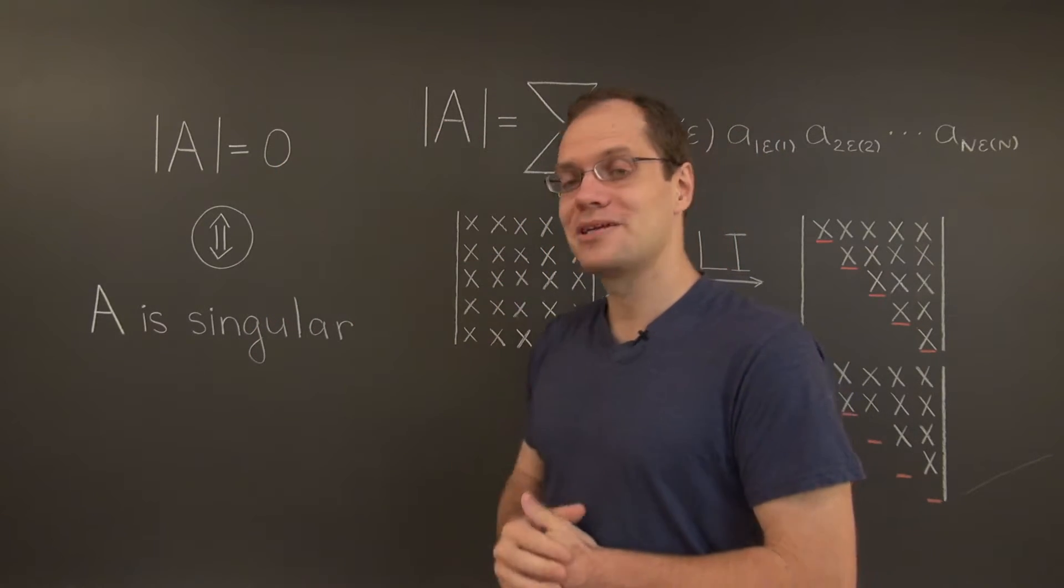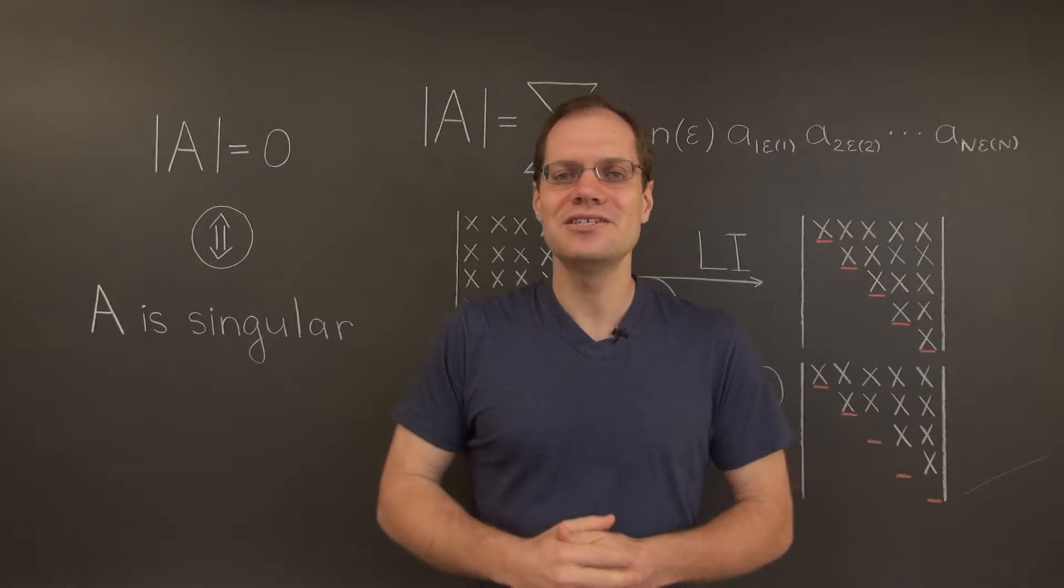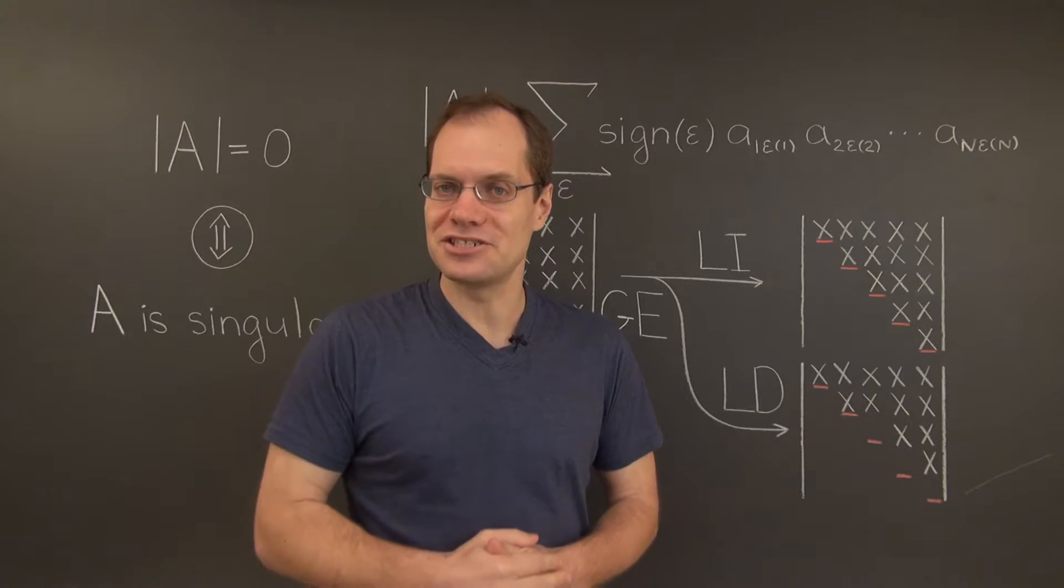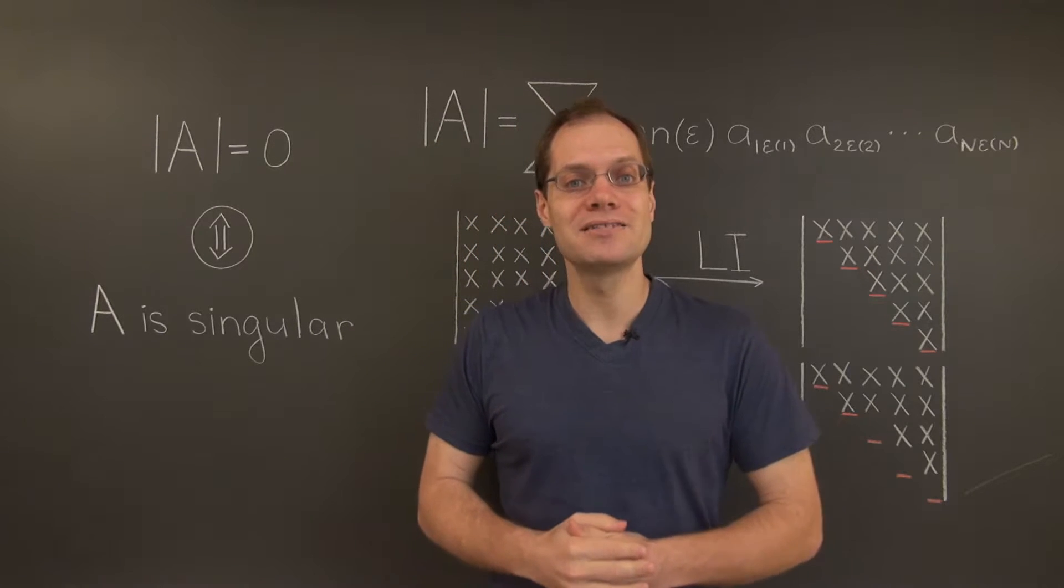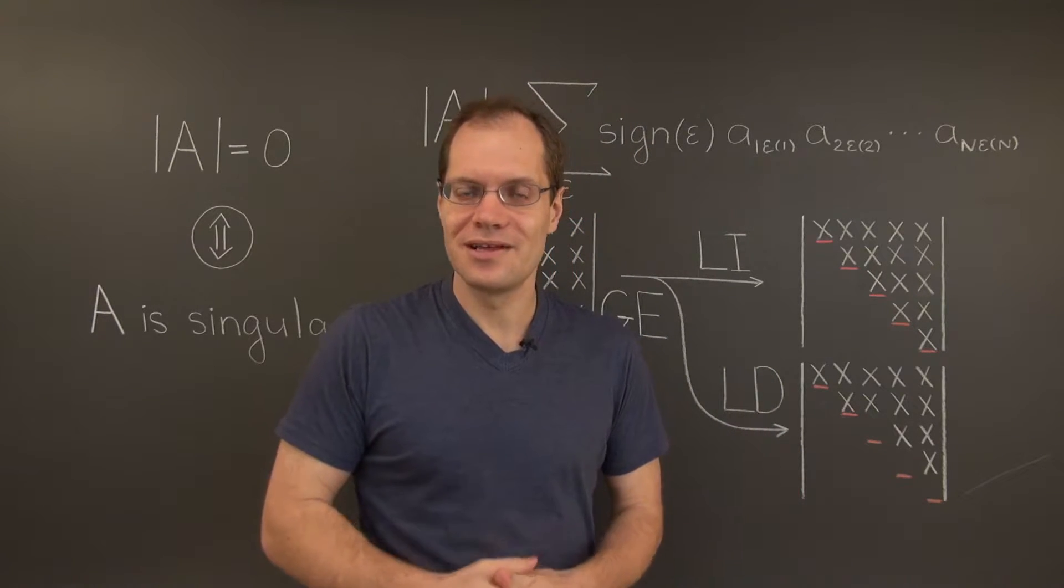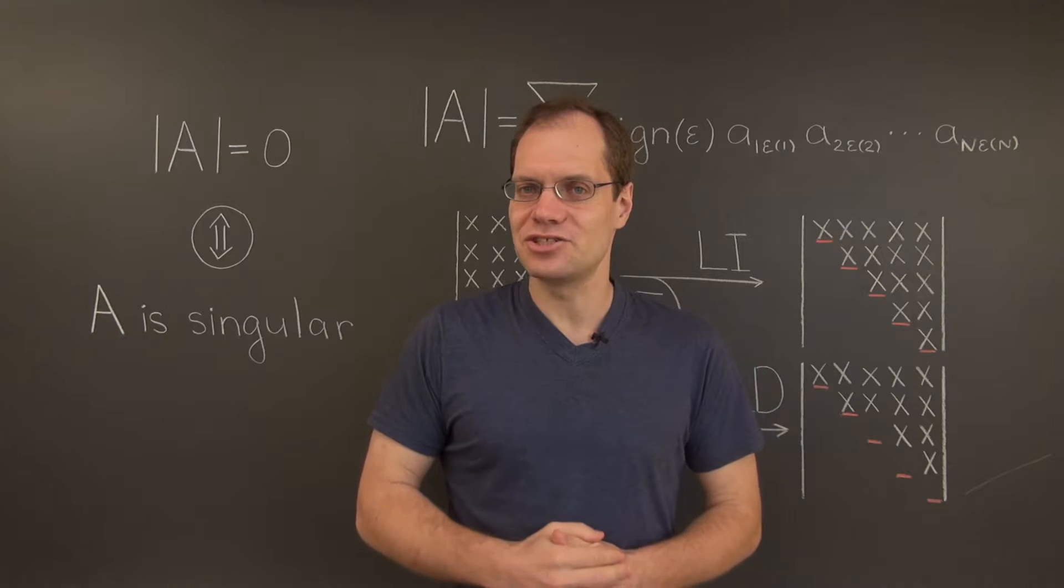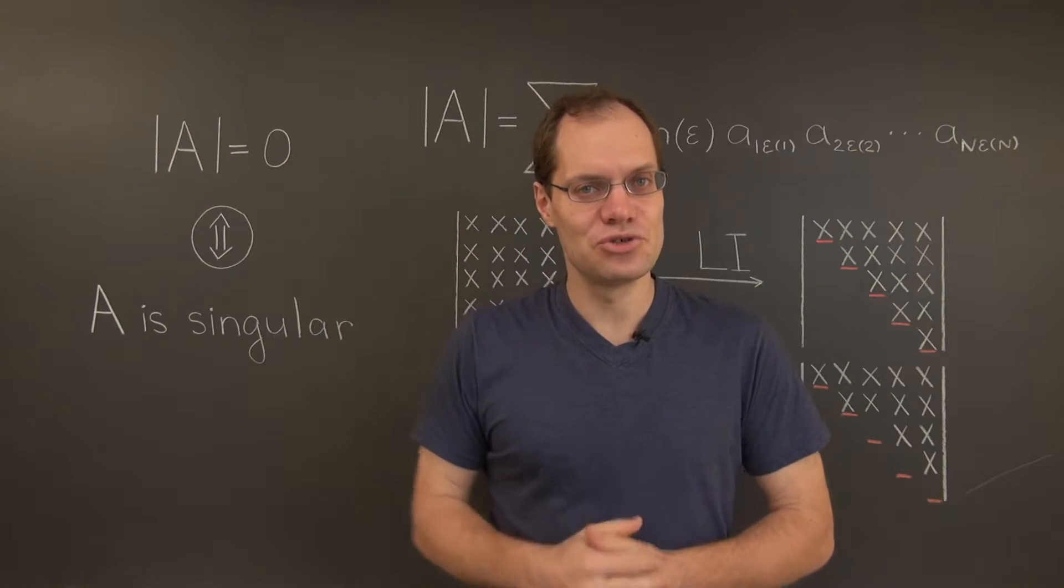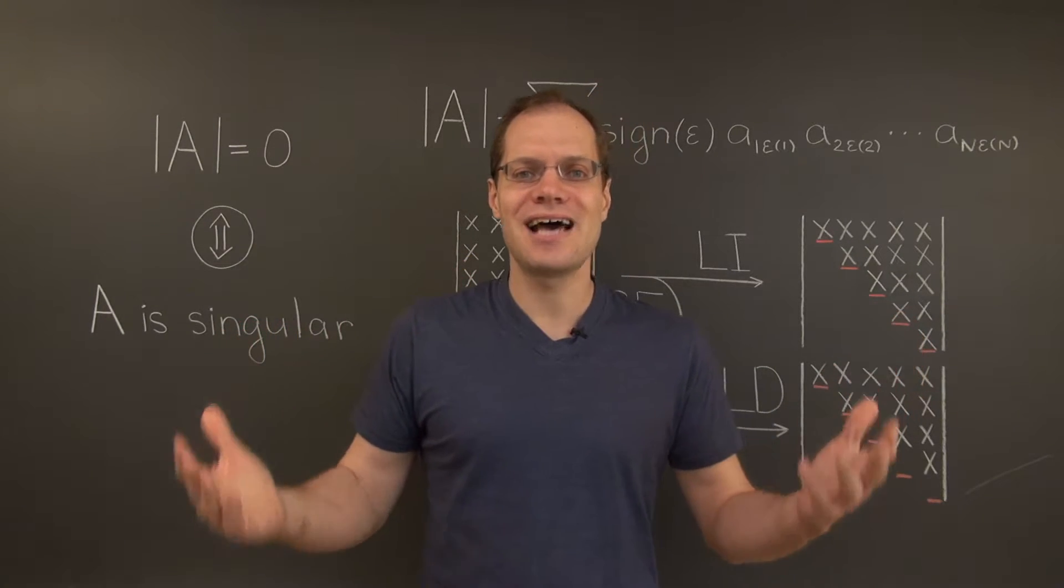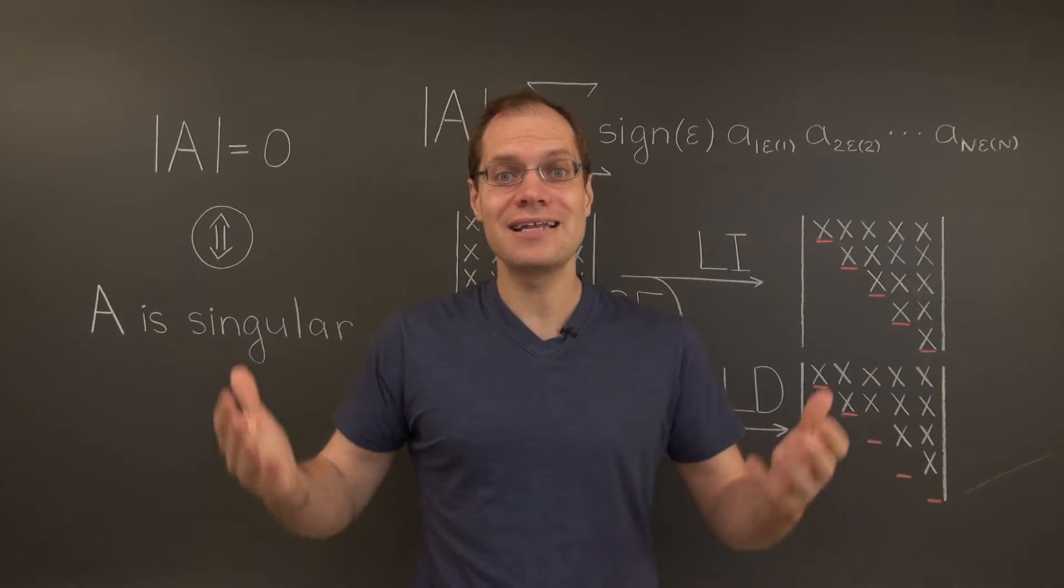What about the determinant being zero? Well, let's review each of the Gaussian elimination operations. Adding a multiple of one row to another leaves the determinant unchanged. Switching two rows changes the sign of the determinant, but not its being zero.